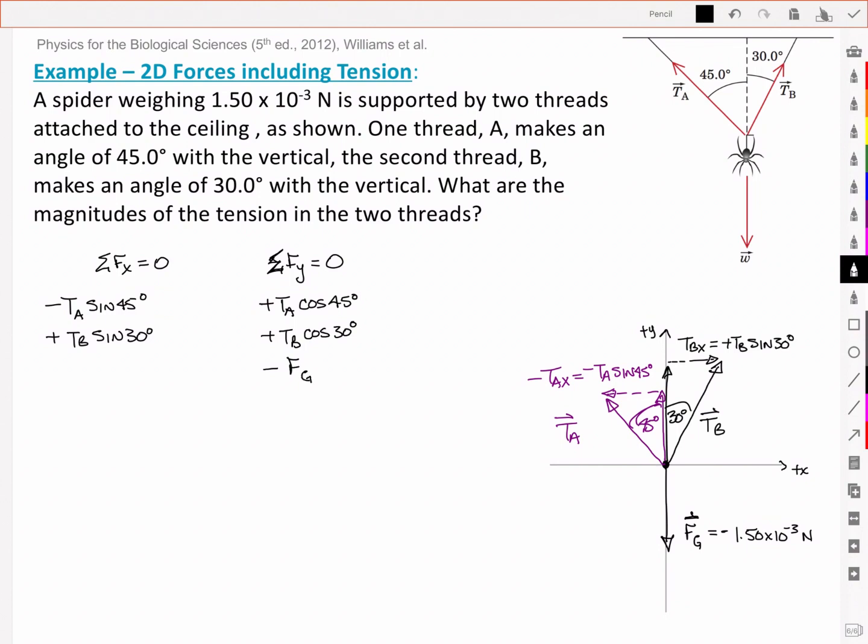Let's write those out then so that I can work with the equations. I've got a negative Ta sine of 45 degrees plus a Tb sine of 30 degrees equal to zero.